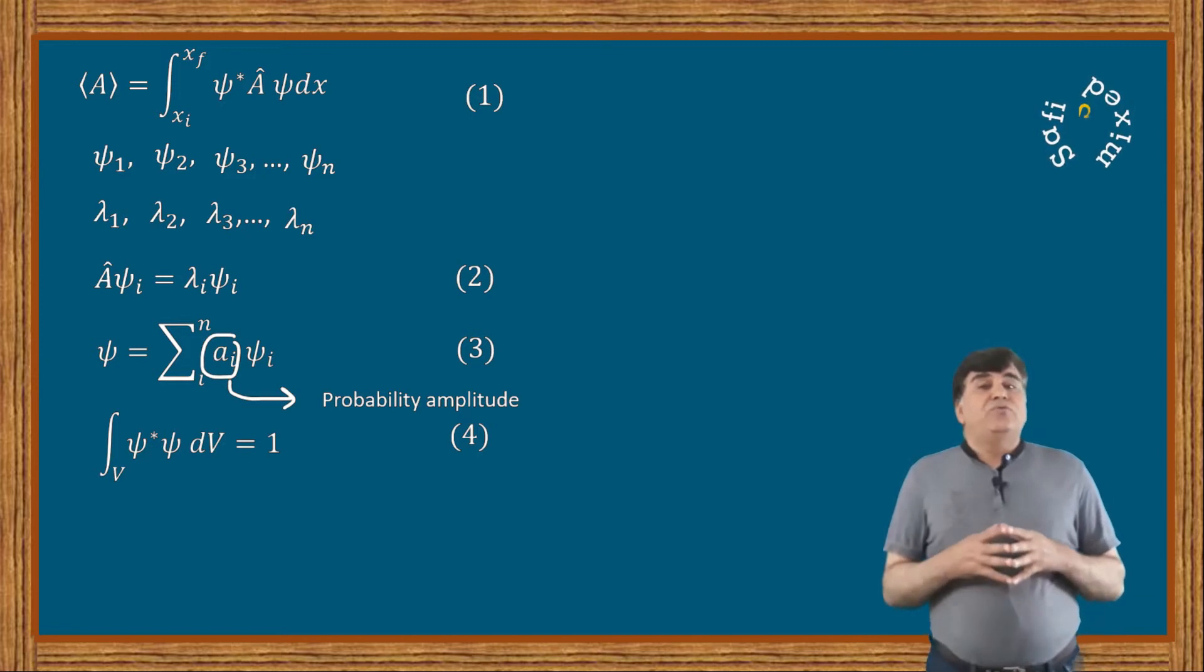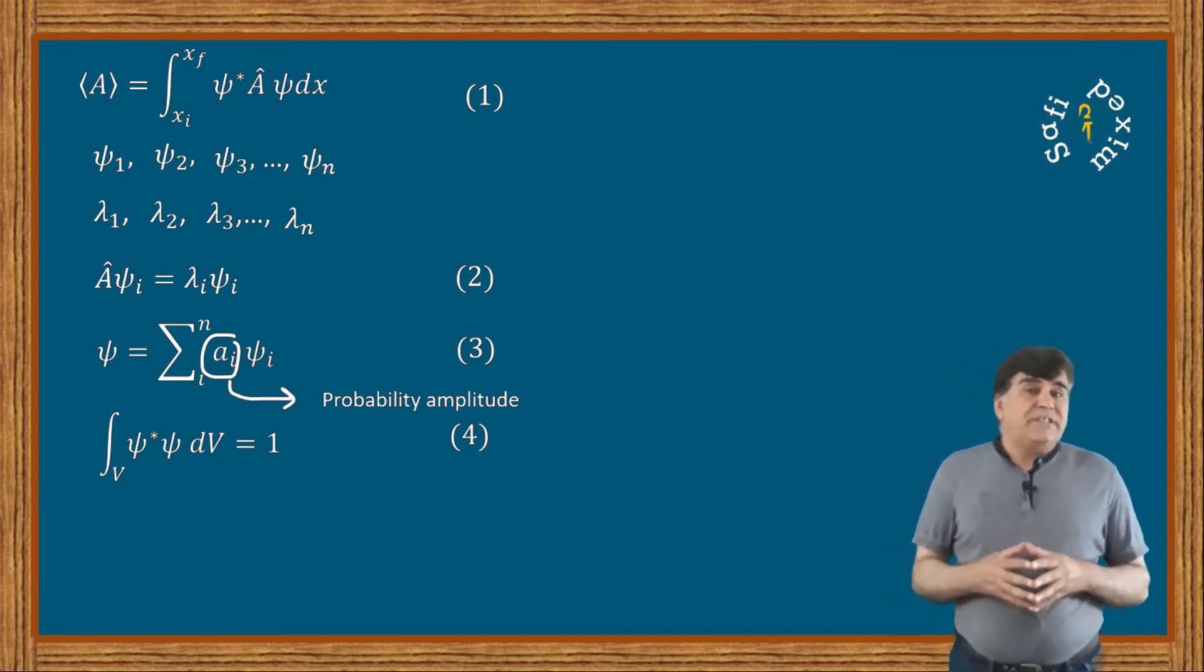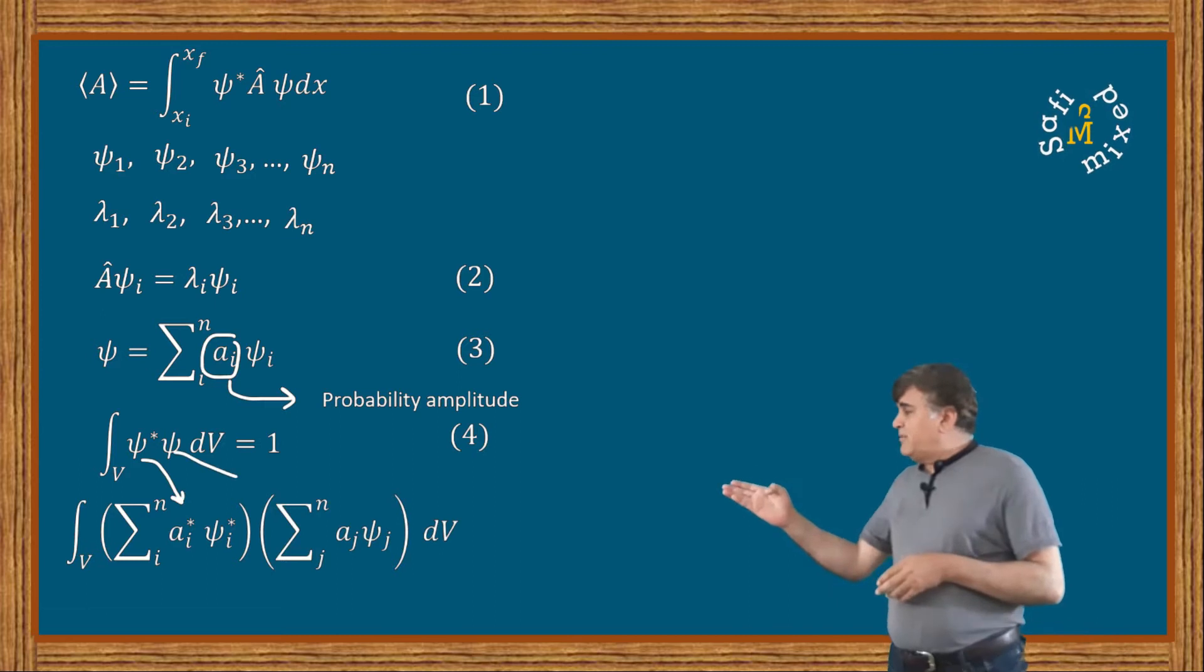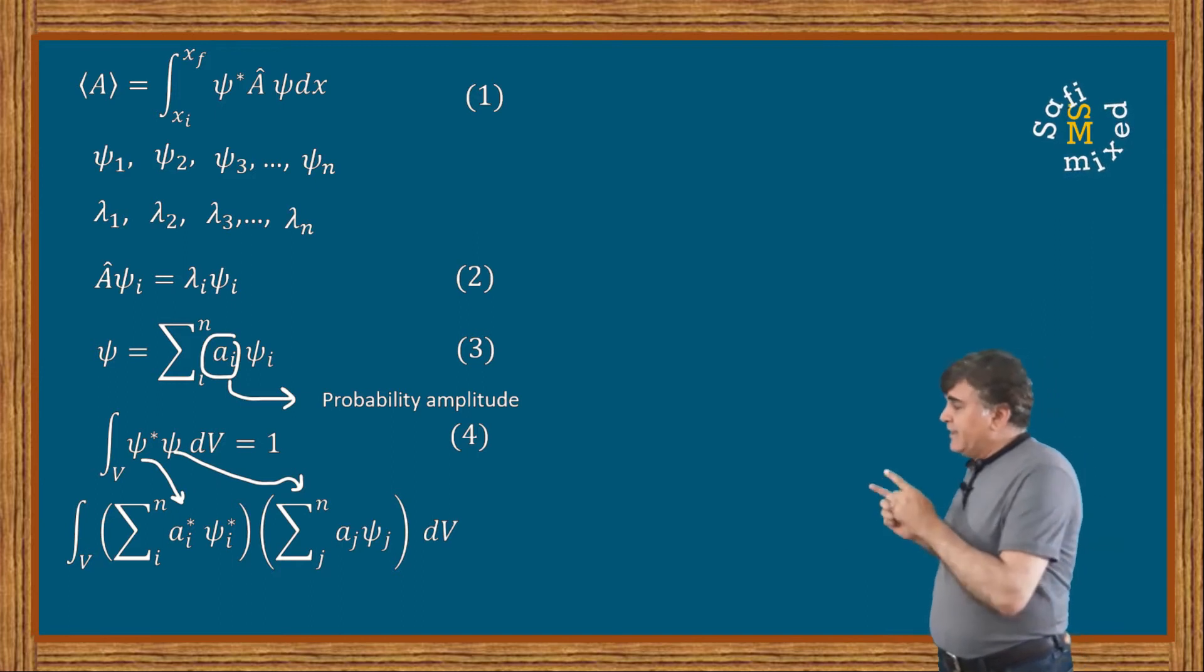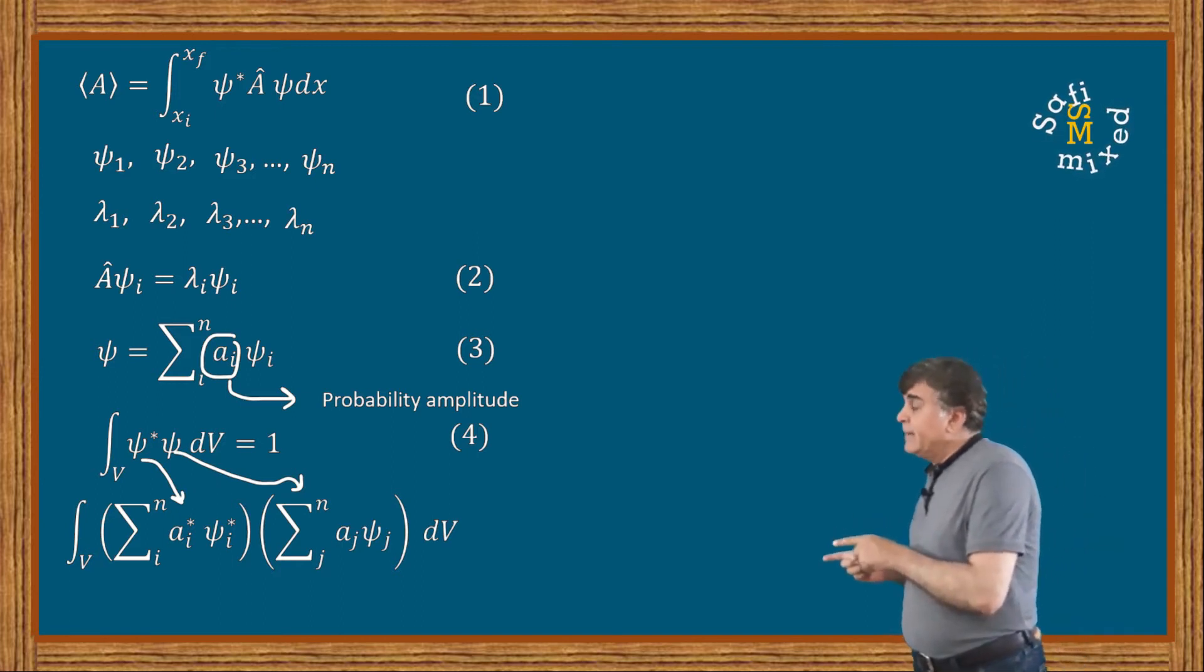Putting values from equation 3, equation 4 can be expressed in the form of this equation. Note that I have used different indices in the two brackets inside the integrand on the right side in order to include all the possible products of ψ* and ψ, and similarly of a* and a.